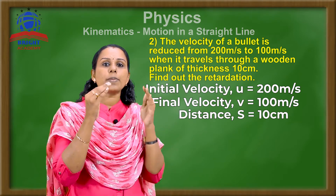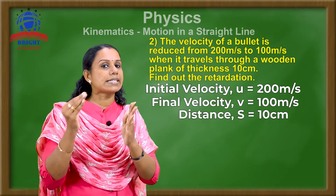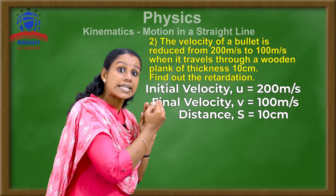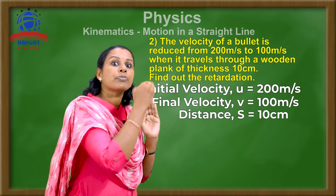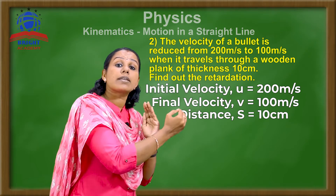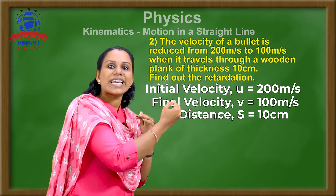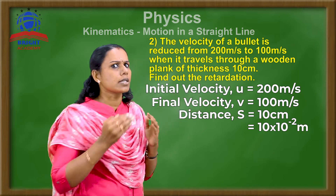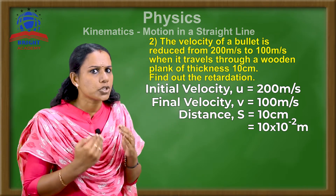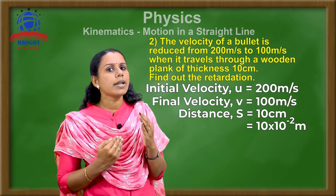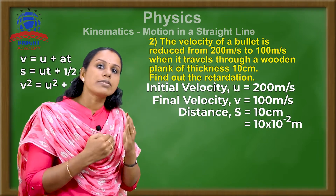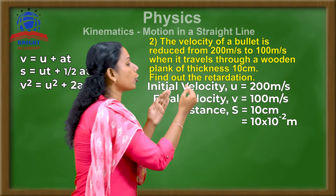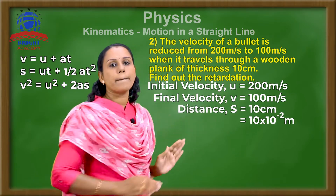We need all quantities in SI units. The SI unit of length is the meter. So 10 centimeter must be converted: 10 cm = 10 × 10⁻² meter. We divide by 100 or multiply by 10 to the power minus 2. Therefore S = 10 × 10⁻² meter.